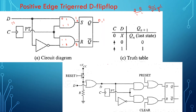Moving on to the practical circuit diagram for implementing a D flip-flop: you can see the clock input, the D input, and the AND gate. In addition, this circuit diagram shows two additional inputs — one is preset and the other is clear. We will study preset and clear in detail as a separate topic. Basically, preset and clear are inputs given to the memory elements — if you want to clear all data in the flip-flop, you make the clear input high.